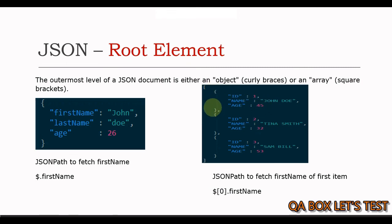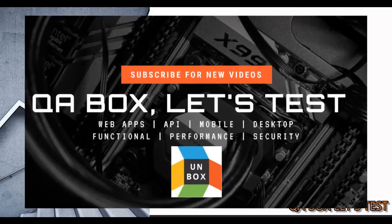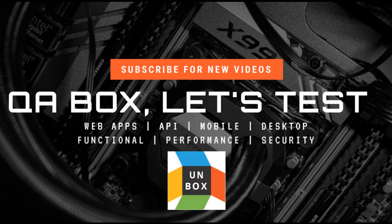Likewise, the JSON path to fetch the first name of the first item in the list would be dollar, square brackets, zero, dot, first name. The opening and closing square brackets are a type of notation used to work with arrays, and inside them we write either an index value or an expression. Index zero signifies the first item in the list. Since the first item is an object or dictionary, we use dot notation to fetch the first name of the child node. In the later videos in this series, we would learn all the expressions, filters, wildcards, operators, etc. in much more detail. That's all from this video — please feel free to join me in the next video. Thanks for watching.